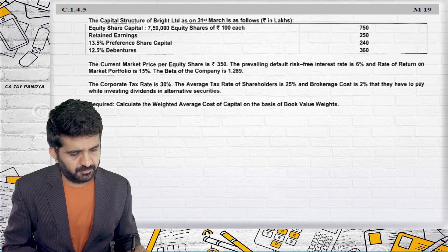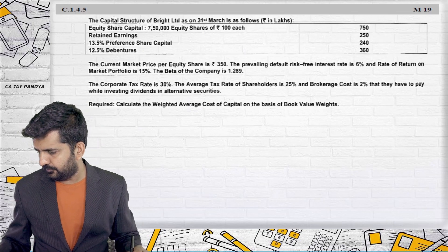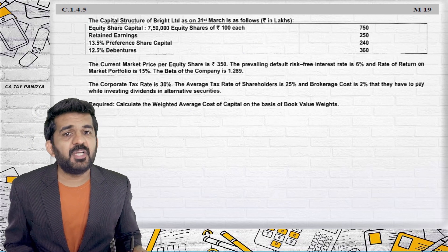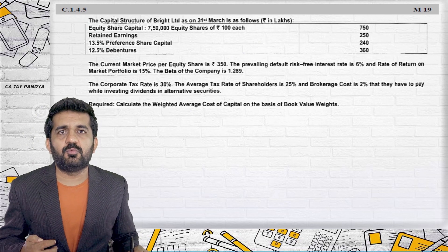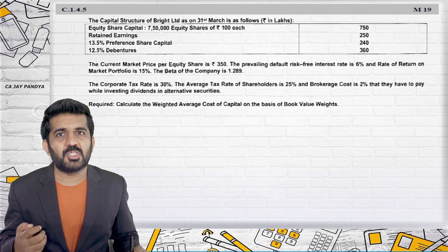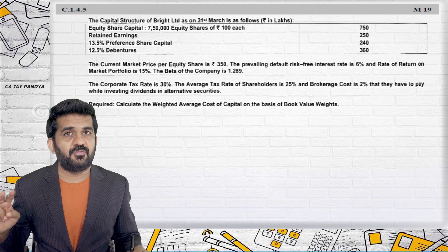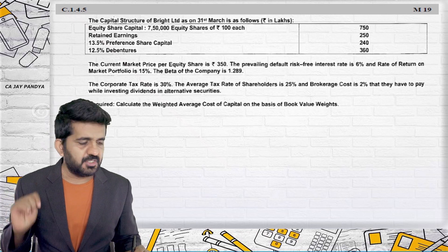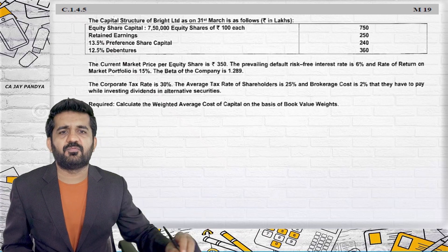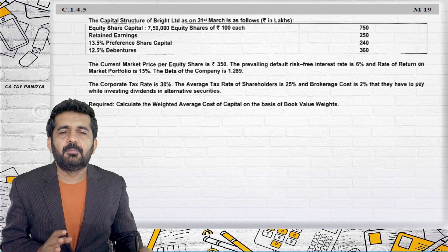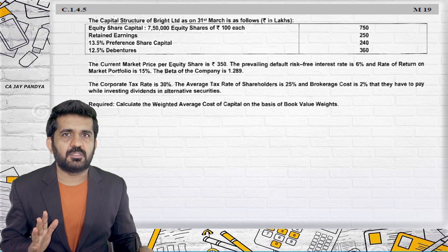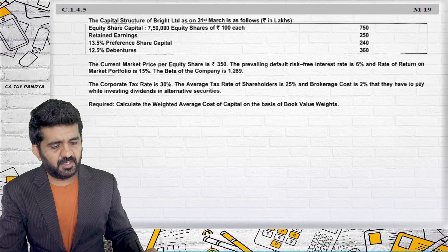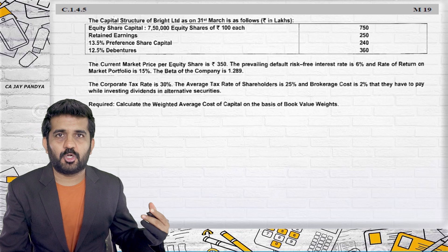We are going to the next question. This is an easy one but a good one. It covers each and everything, including the cost of retained earnings with both variables - brokerage as well as personal taxation. This is one of the latest questions on overall cost of capital. Believe me, this question was of 5 marks. When we solve it, you will say sir it is too much for 5 marks, but it is actually a very short question for 5 marks.